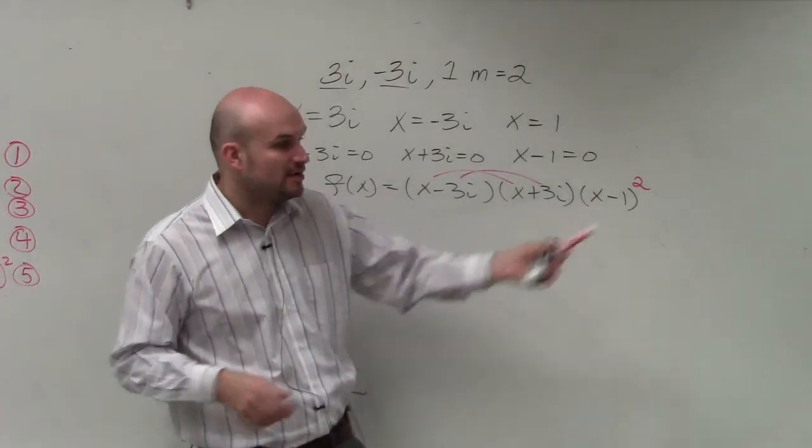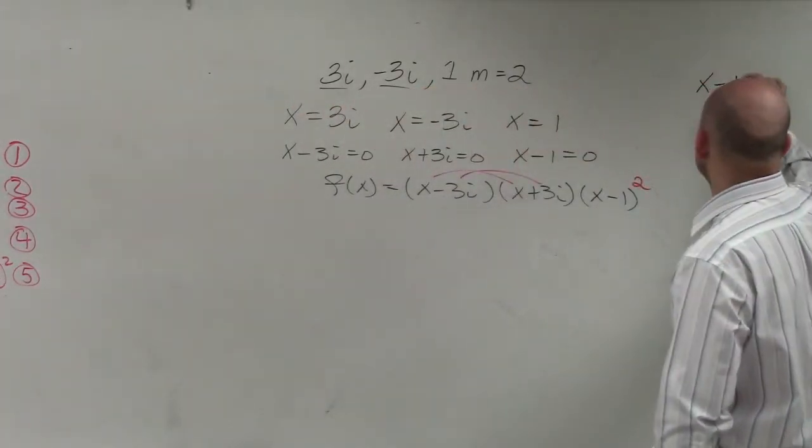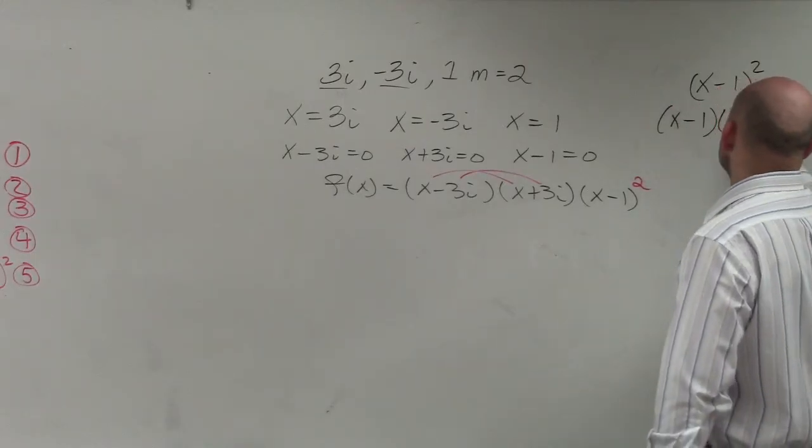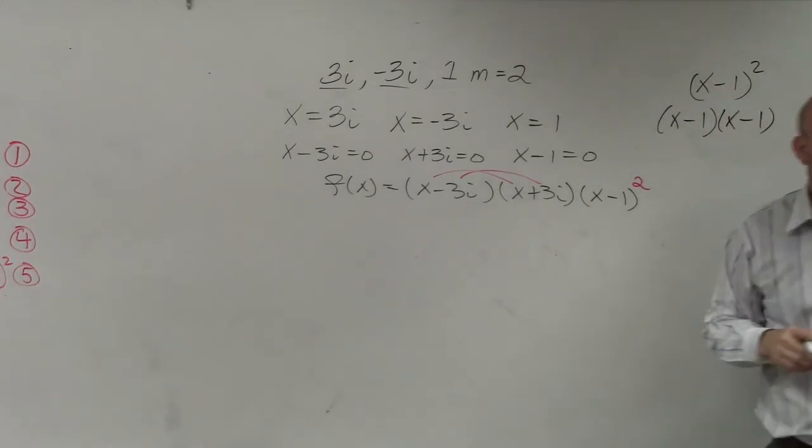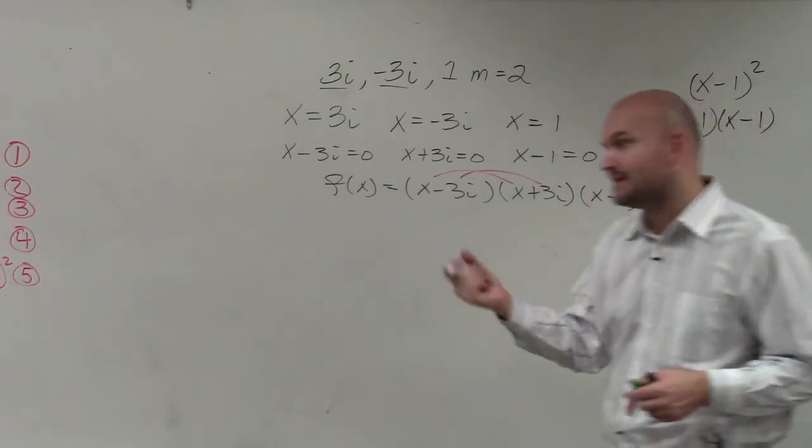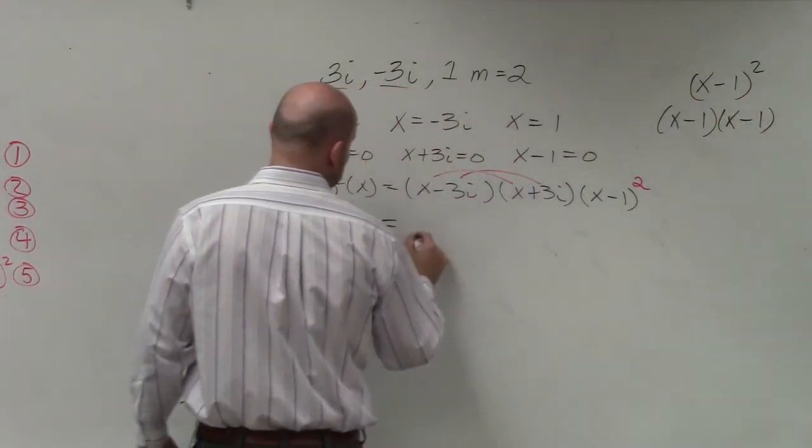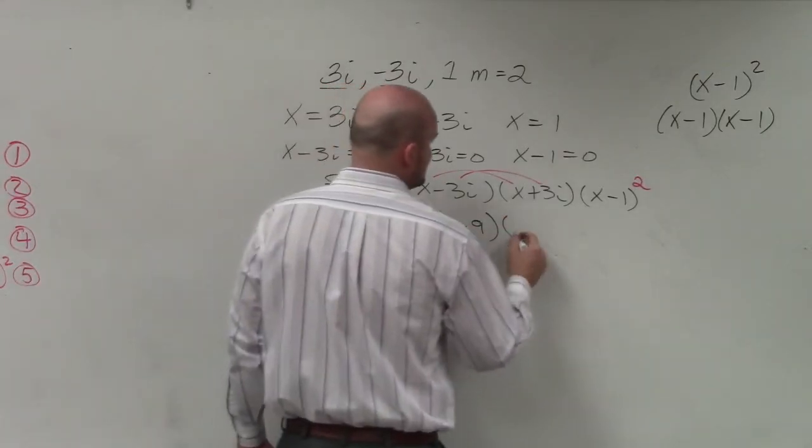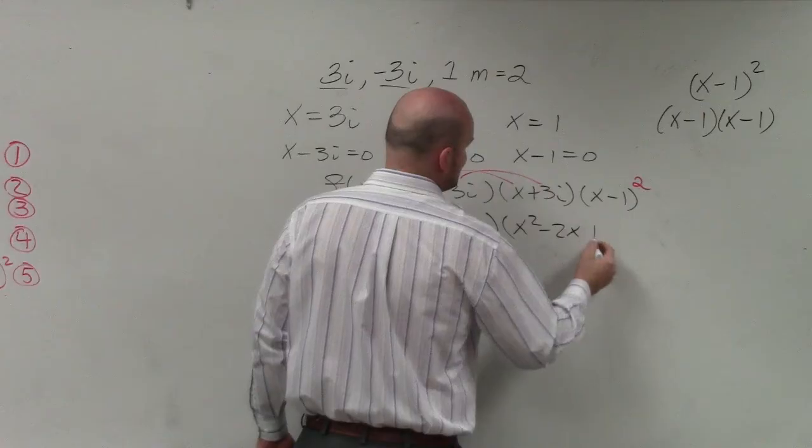All I need to do is multiply the first two terms. This is a binomial squared. I'm still surprised on how many students have trouble understanding that x squared minus 1 is x minus 1 times x minus 1. You guys should know what that binomial squared is, like this. This gives you x squared plus 9. This gives you x squared minus 2x plus 1.